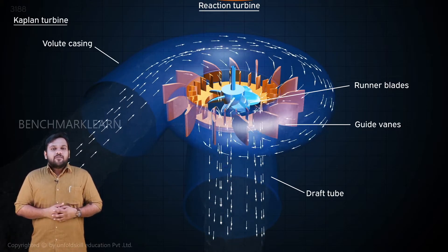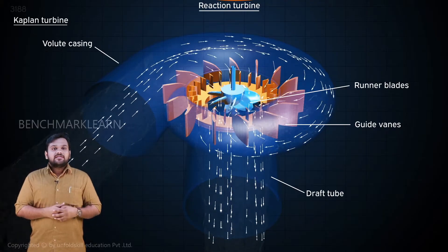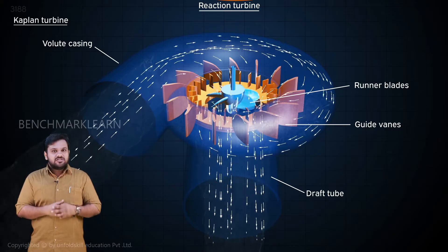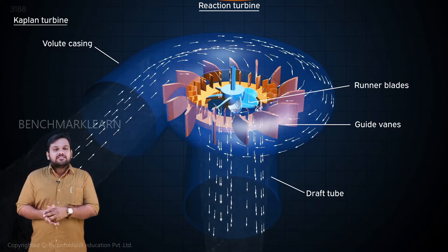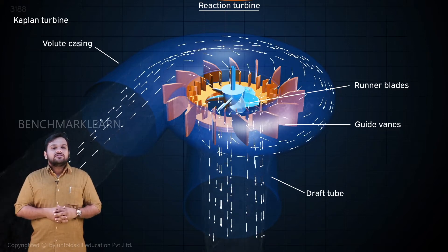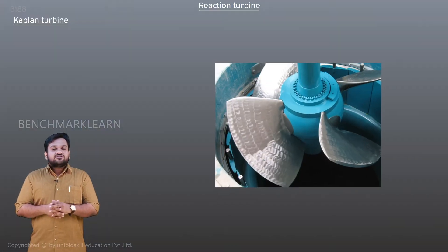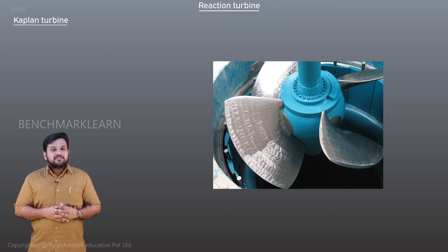Kaplan turbines are usually used as low-head turbines, typically below 40 meters. They are used to extract the last bit of energy from water. Besides this, they are also used in ships for propulsion. The Kallada project in Kerala uses two Kaplan turbines of 7.5 megawatt each at a rated head of 45 meters.